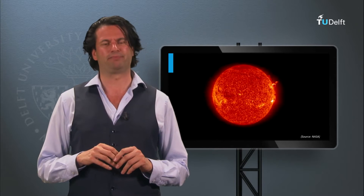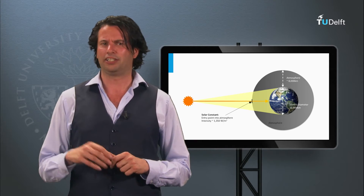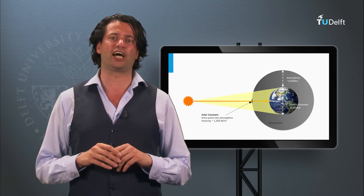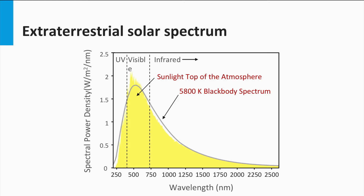We know the shape of the solar spectrum. How is the spectral shape and irradiance of the solar light affected by the Earth's atmosphere? The Earth's atmosphere is 800,000 kilometers thick. The irradiance of the solar light arriving at the outer side of the Earth's atmosphere is approximately 1350 watts per square meter. The spectral power density of this irradiance is shown by the yellow region, called the extraterrestrial spectrum. The gray line represents the spectrum of a blackbody radiator at a temperature of 5,800 Kelvin, demonstrating that Planck's formula gives a reasonable estimate of the solar spectrum.